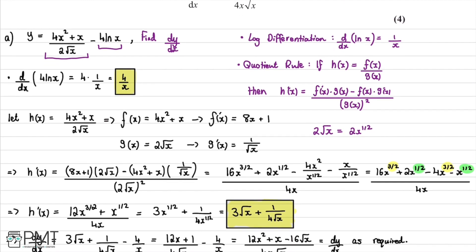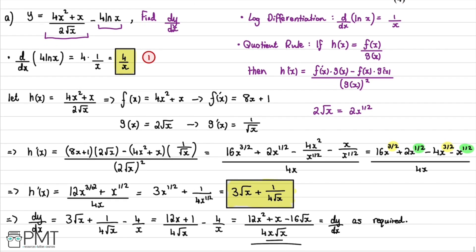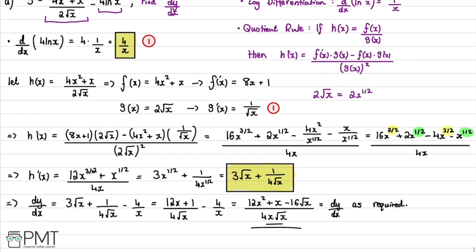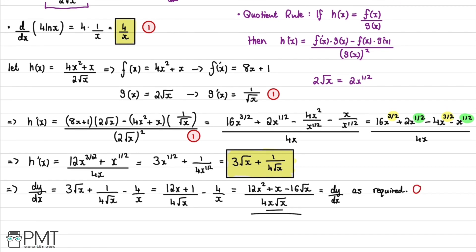This question was worth four marks. The first mark is for knowing how to differentiate the ln term to get 4/x. The second mark is for the method of using the quotient rule. The third mark is for substituting values into the quotient rule formula and making progress. The fourth mark is for reaching the correct final answer.